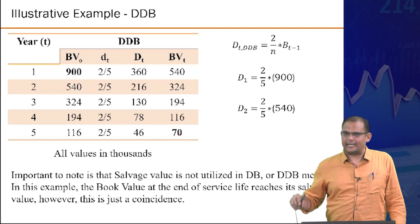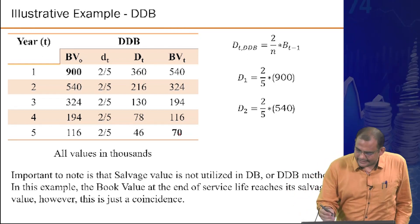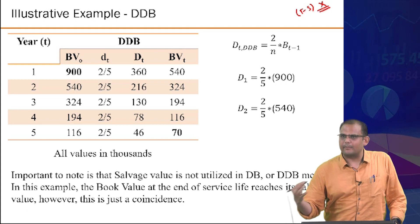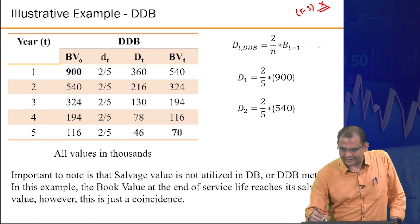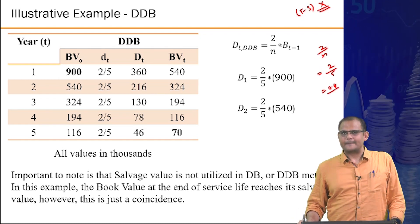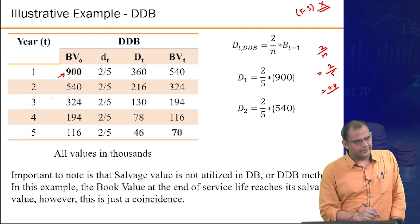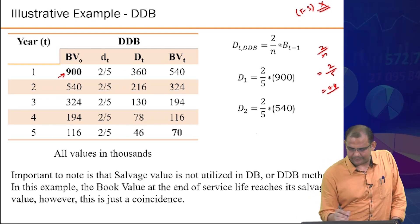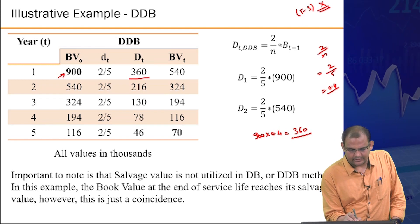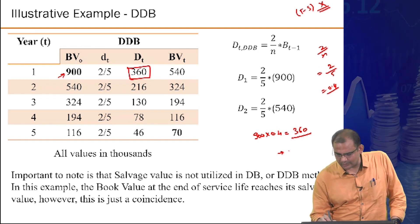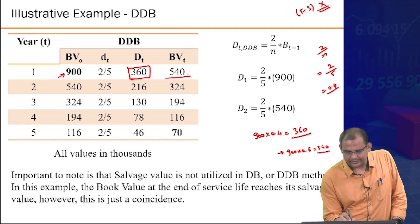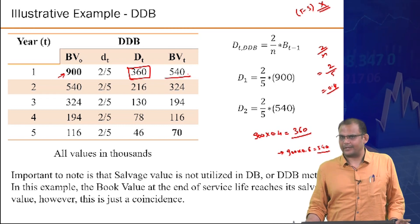Double declining balance method: fraction d = 2/N = 2/5 = 0.4. Starting at 900, year 1 depreciation = 900 × 0.4 = 360, book value = 900 × 0.6 = 540. Year 2: 540 × 0.4 = 216, book value = 324.